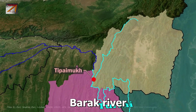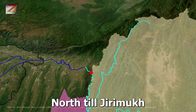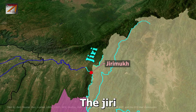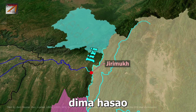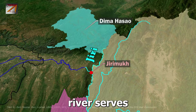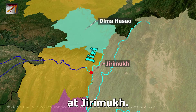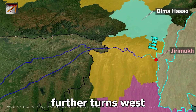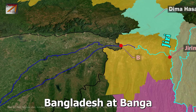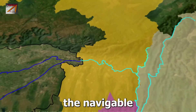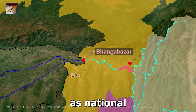From Tipaimukh, the Barak River turns northward and flows north till Jirimukh, where it meets the Jiri River. The Jiri River is a tributary of Barak in Assam, originating in Dima Hasao district. It serves as the interstate boundary between Manipur and Assam. The Barak then turns west into Cachar district of Assam, entering Bangladesh at Bhanga Bazar. The navigable portion of Barak from Lakhipur to Bhanga has been declared National Waterway 16, with a total length of 121 km.